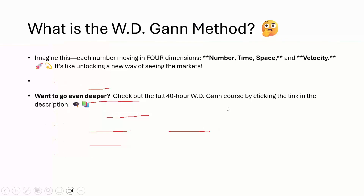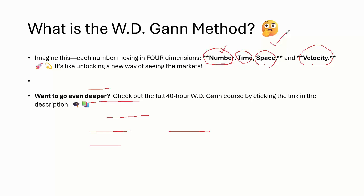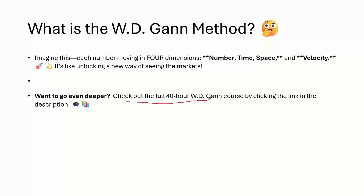These studies are purely mathematical. All in all, when you combine all these studies together, it says that whenever you are doing a trend study, you don't see only the number and volume — you need the number, time, space and velocity. When it comes to space, it is telling us about human behavior or thinking, which is also a component of W.D. Gann study. This four-dimensional study — number, time, space, velocity — is very, very important.